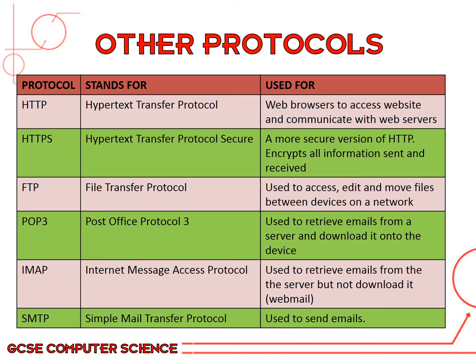Let's look at the other protocols used in networking. HTTP — Hypertext Transfer Protocol — is really common and is at the start of most URLs. It is used by web browsers to access any website and communicate with a web server. HTTPS is the secure version of this protocol; it uses SSL certificates and encrypts all of the information sent and received through websites. FTP — File Transfer Protocol — is used to access, edit, move, delete, and rename files on a network, for example uploading photos on Facebook or downloading multiple files from a website.